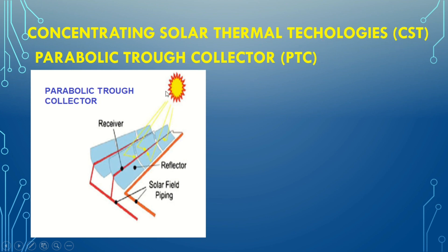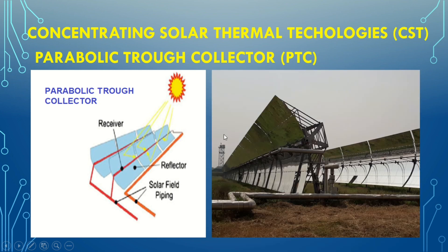The first one is parabolic trough collector, or PTC technology. Here you can see these parabolic shaped mirrors which reflect the sun rays to a center point called the receiver. This receiver is a linear pipe which contains fluid, mostly oil. This hot oil is used to make steam which will rotate the turbine.